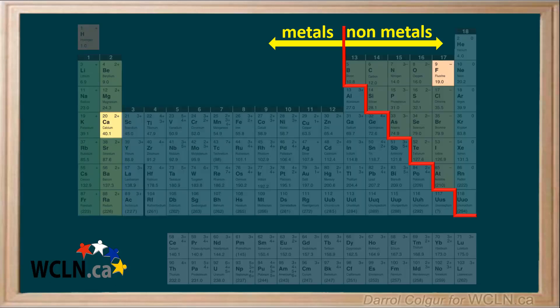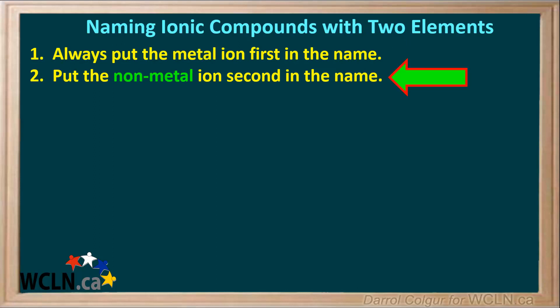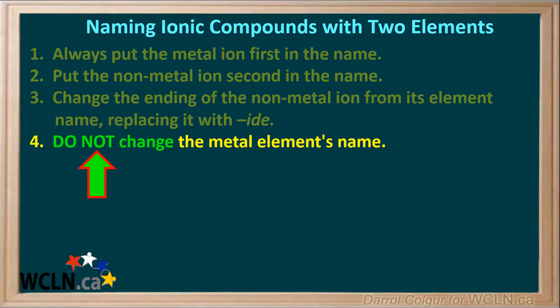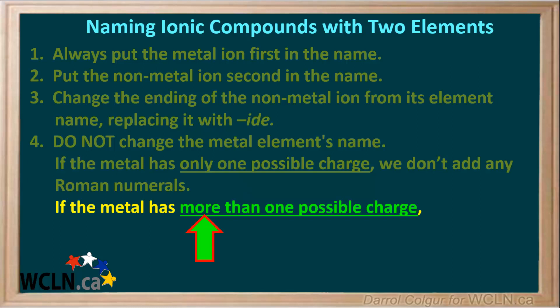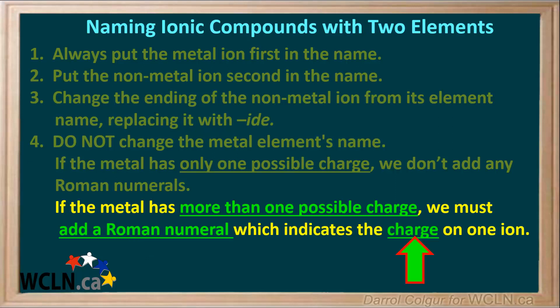For example, a compound consisting of calcium and fluorine is ionic. Another example could be a compound consisting of chromium and sulfur. Any compound with one element on the left of the staircase and one element on the right is an ionic compound with two elements. Now let's look at the steps we use to name ionic compounds with two elements. The metal is always first in the name and the nonmetal is second. The name of the nonmetal ion is always changed to make it end in -ide. But we don't change the metal element's name. What we must do now is look up the metal on the periodic table. If the metal ion has only one possible charge, we do not add a roman numeral after its name, and we're finished. However, if the metal has more than one possible charge, then we must add a roman numeral after the metal's name, and this roman numeral gives the charge on one ion of the metal.